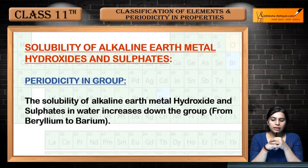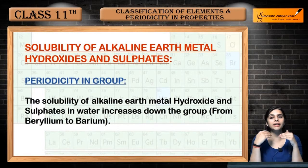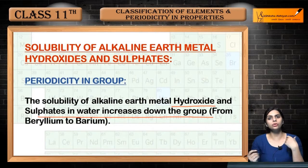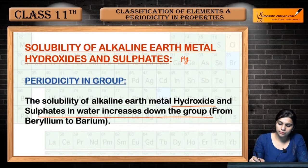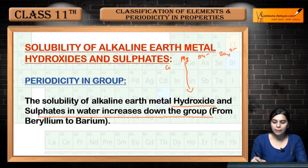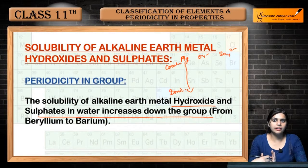Next is the solubility of alkaline earth metal hydroxides and sulfates. For the second group elements — such as magnesium and others down the group — as you move down, the smaller elements form covalent compounds while the larger ones form ionic compounds. Water is polar, so like dissolves like. Therefore, as you move down the group, the solubility of alkaline earth metal hydroxides and sulfates in water increases.